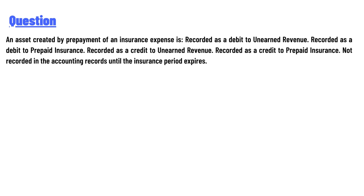The answer choices are: recorded as a debit to Unearned Revenue, recorded as a debit to Prepaid Insurance, recorded as a credit to Unearned Revenue, recorded as a credit to Prepaid Insurance, or not recorded in the accounting records until the insurance period expires.